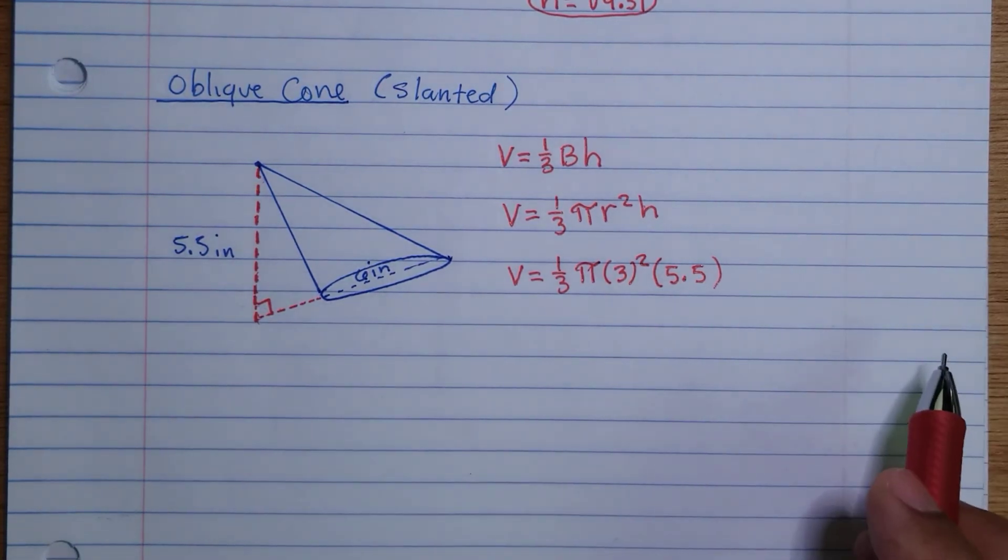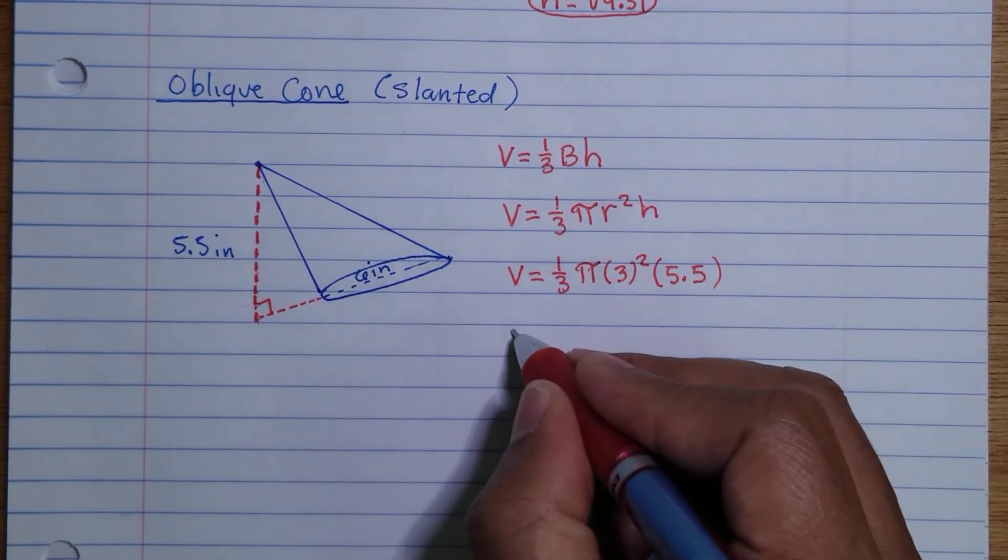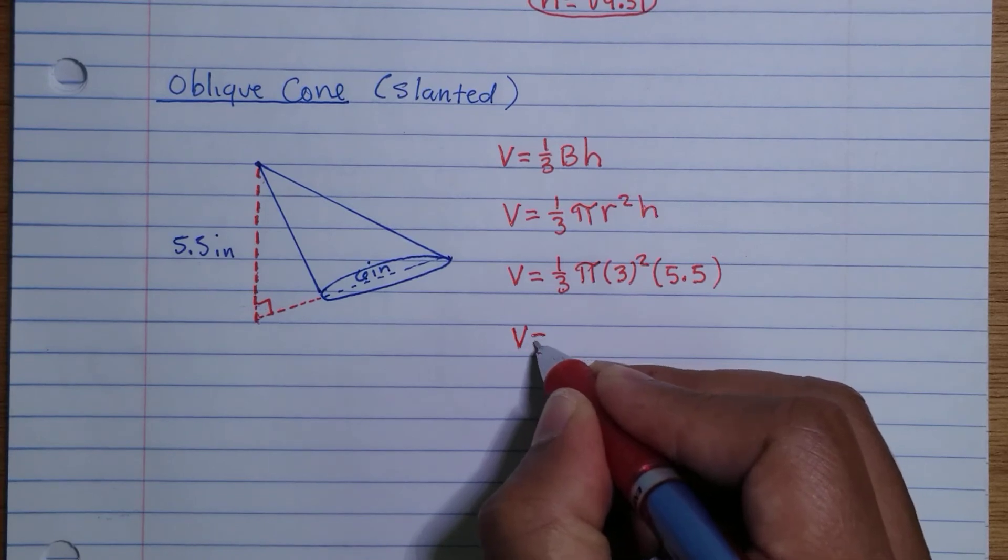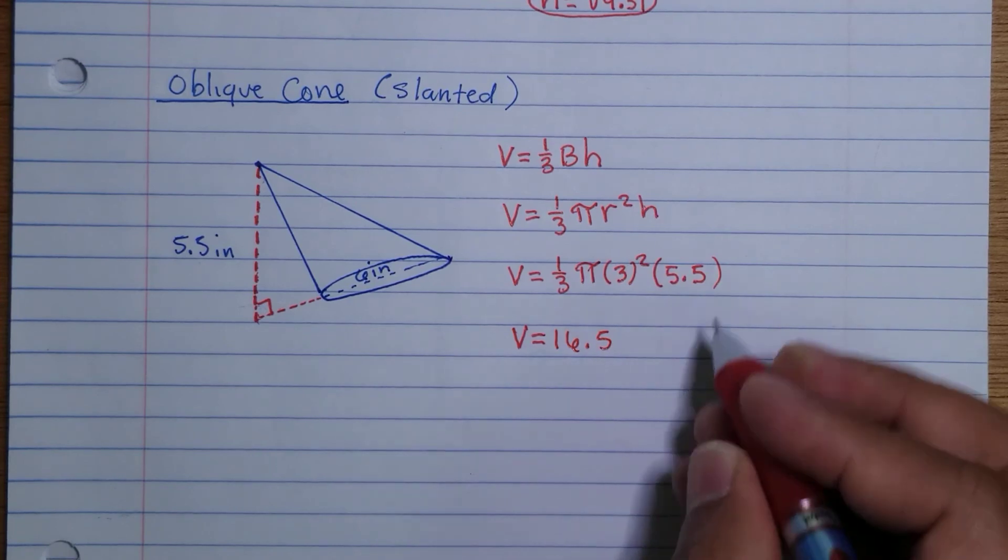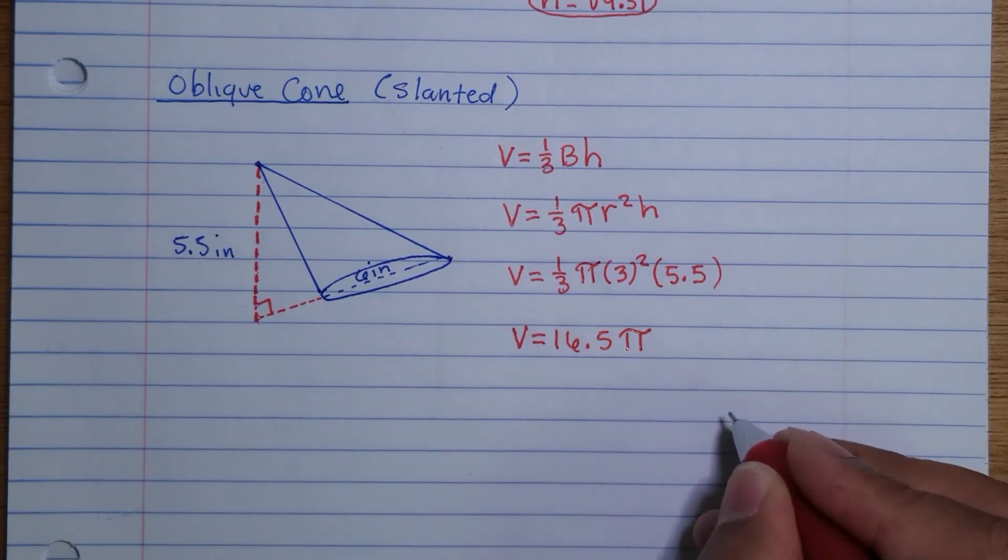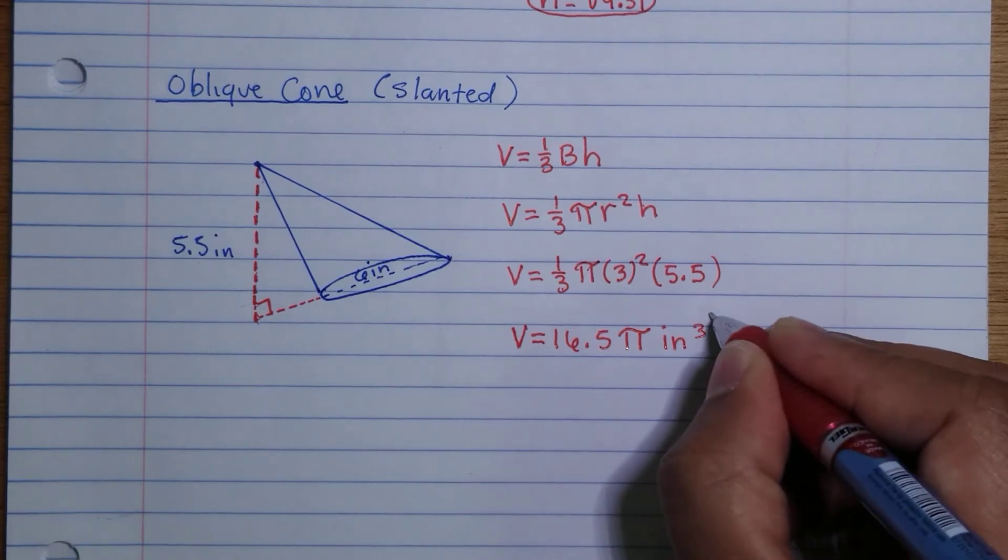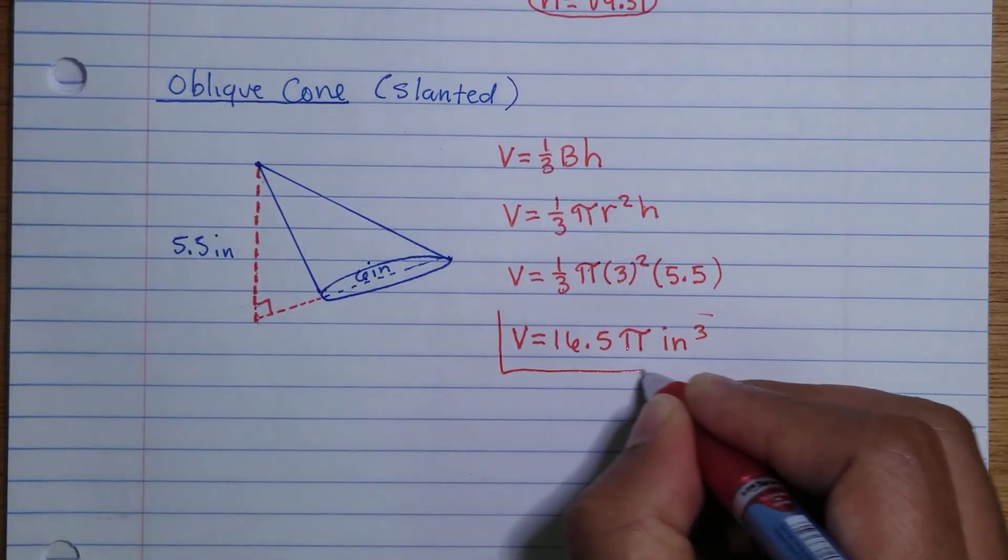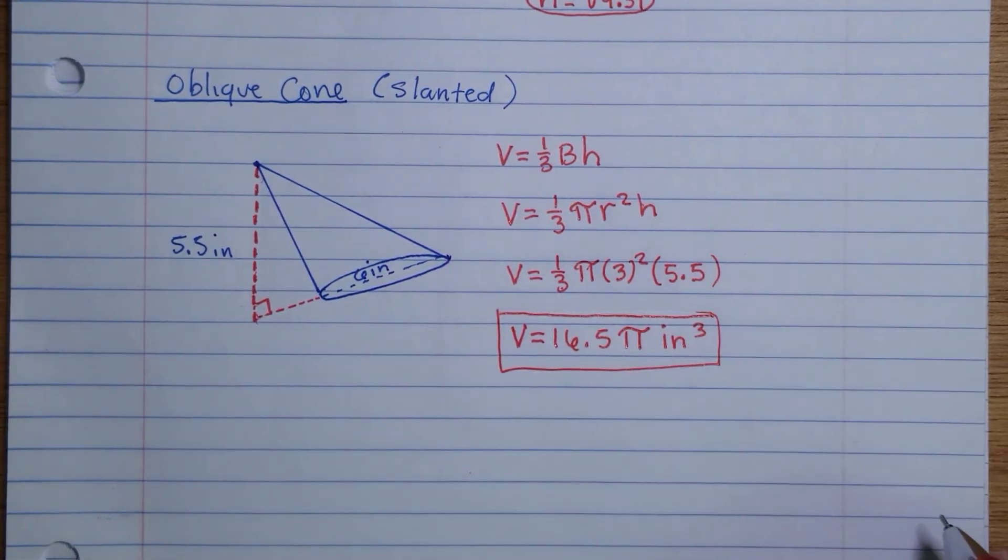That's all for this. When you multiply just 1/3 times 3² times 5.5, your calculator is going to give you 16.5, and then just keep the π next to it. So 16.5π inches³. This is the volume of this oblique cone.